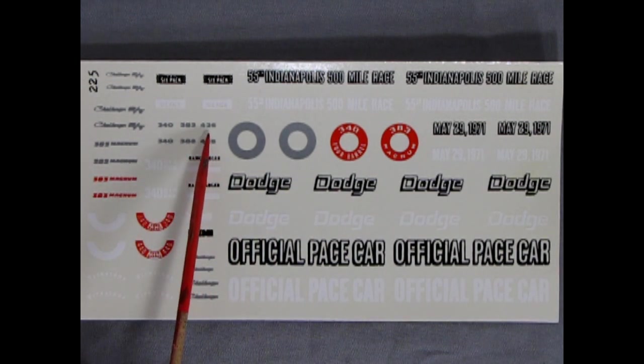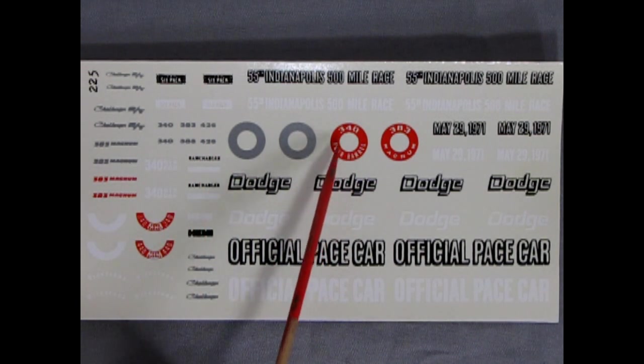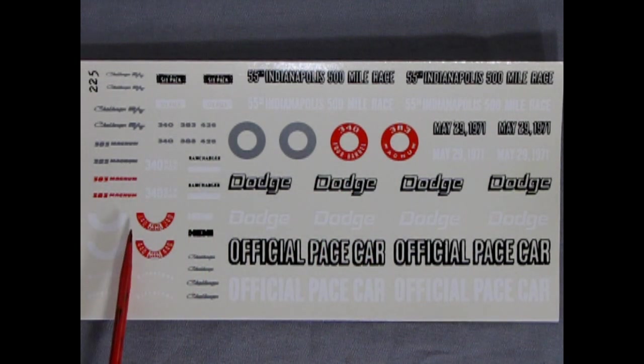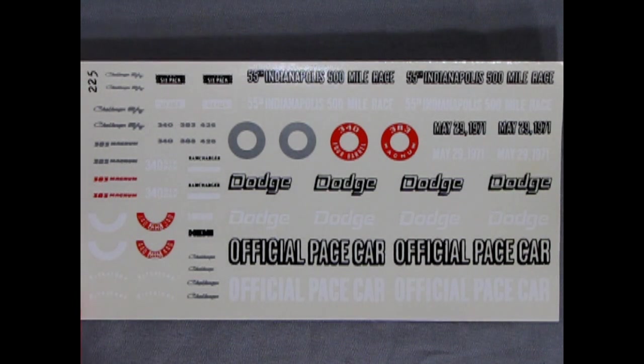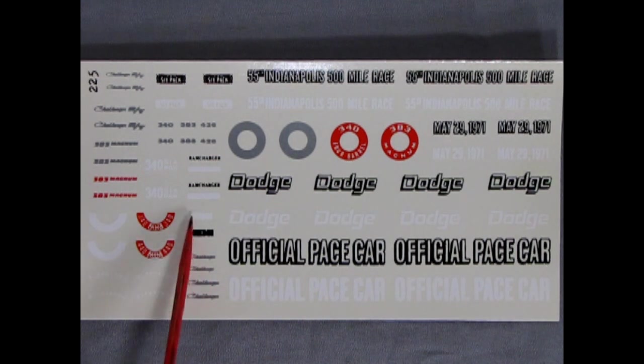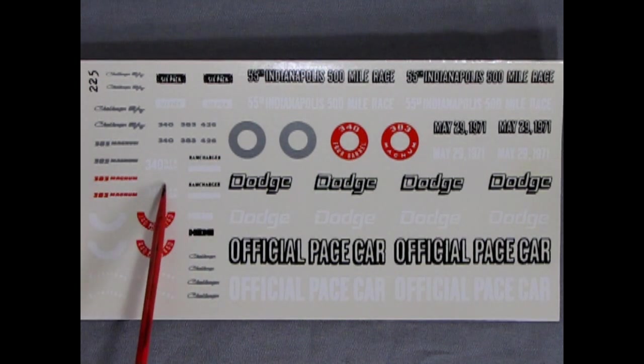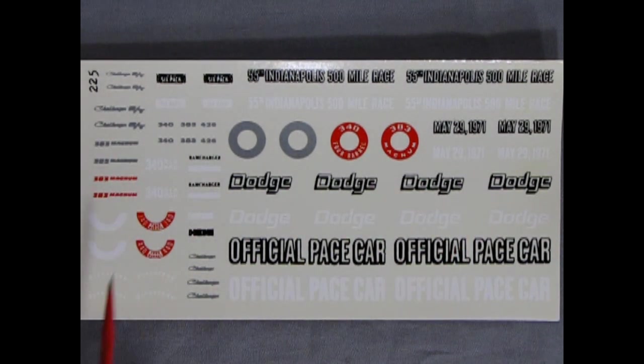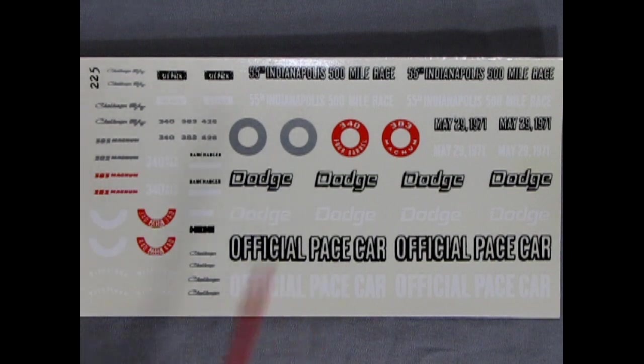440, 383 and 426. So 340 4 barrel, 383 Magnum. And then we got 340 here and the 440 with the circular air cleaners. And then our Firestone tire decals and a lot of Challenger and Charger things. Oh no, they are all Challenger, just different size. Hemi, 340 six pack, 383 Magnum, Challenger RT. So yeah, this was a cool decal sheet. It's too bad Fred Cady isn't still around.